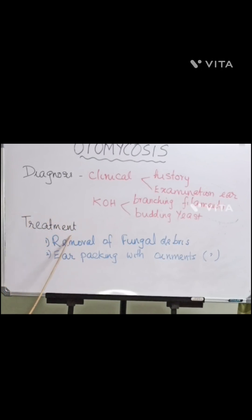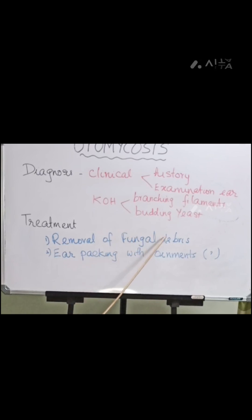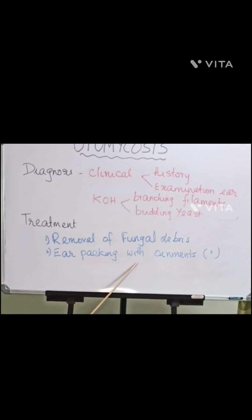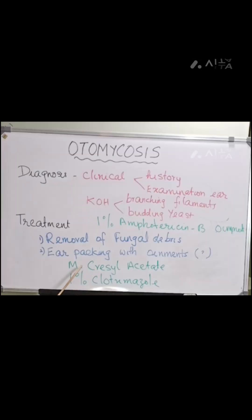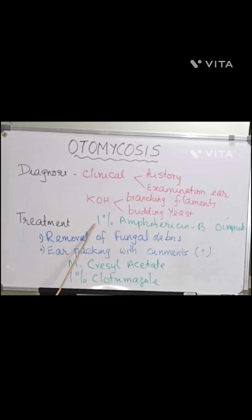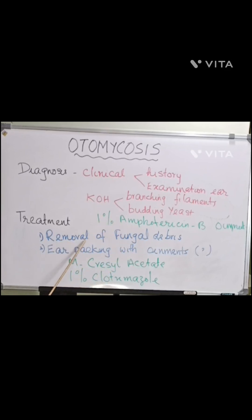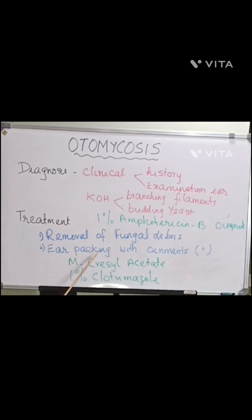The treatment — the first and foremost step — is removal of the fungal debris. Perform suction clearance or dry mopping to remove the complete fungal debris. After that, pack the ear with ointments. You can use either mercurochrome acetate or 1% clotrimazole ointment or solution. In resistant cases, you can use 1% amphotericin B ointment.